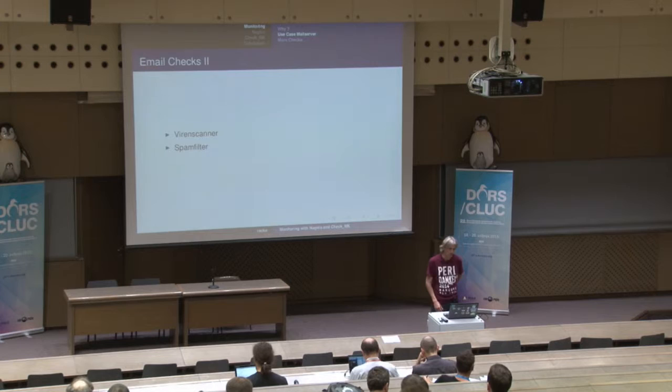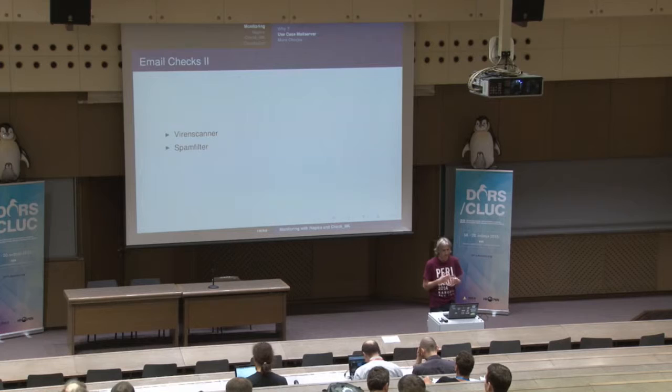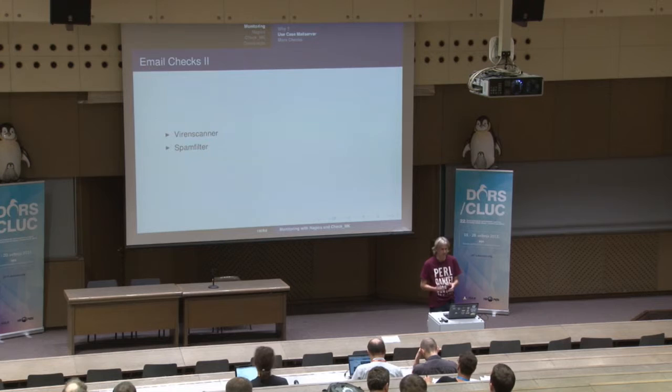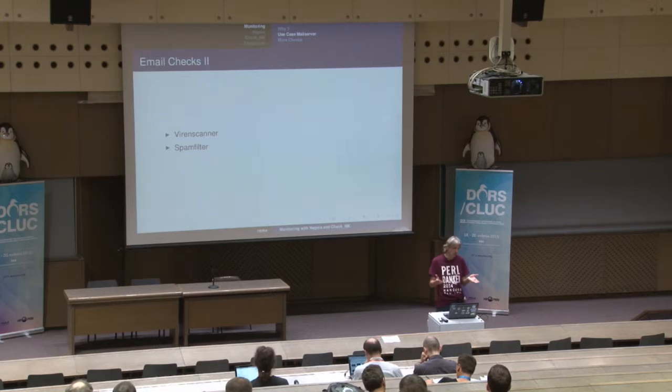Other things which can bring your mail server down if not running properly are a virus scanner and a spam filter. If the virus scanner is unavailable, you might say you don't receive any emails because you don't want viruses in your system without checking. A similar thing can happen with the spam filter. So you want to monitor them as well and see that they function properly. For example, you'll want to check how many viruses are caught, because if there are none, there's really a problem with the virus scanner.